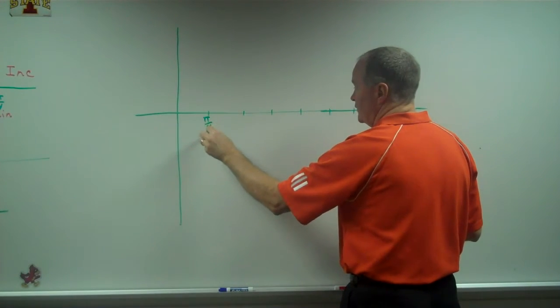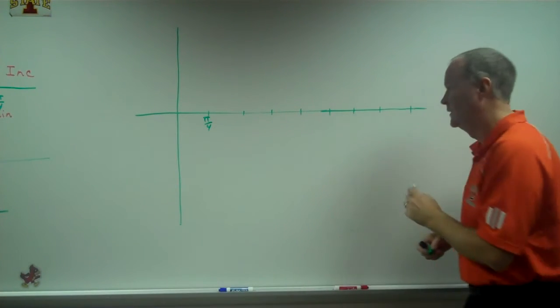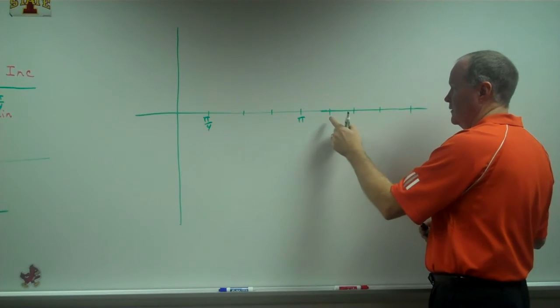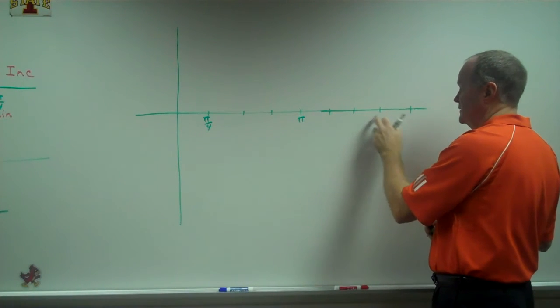π over 4, all the way through. So, 2, 3, 4, 5, 6, 7, 8.